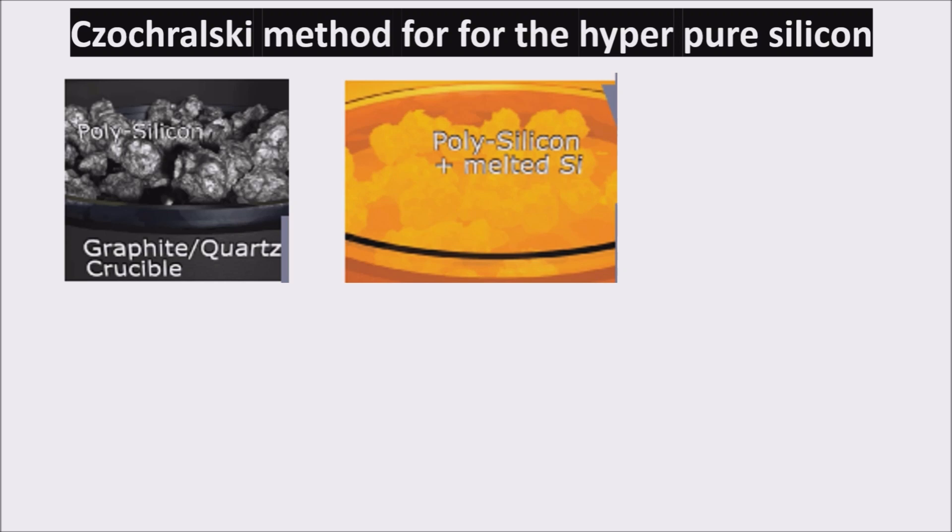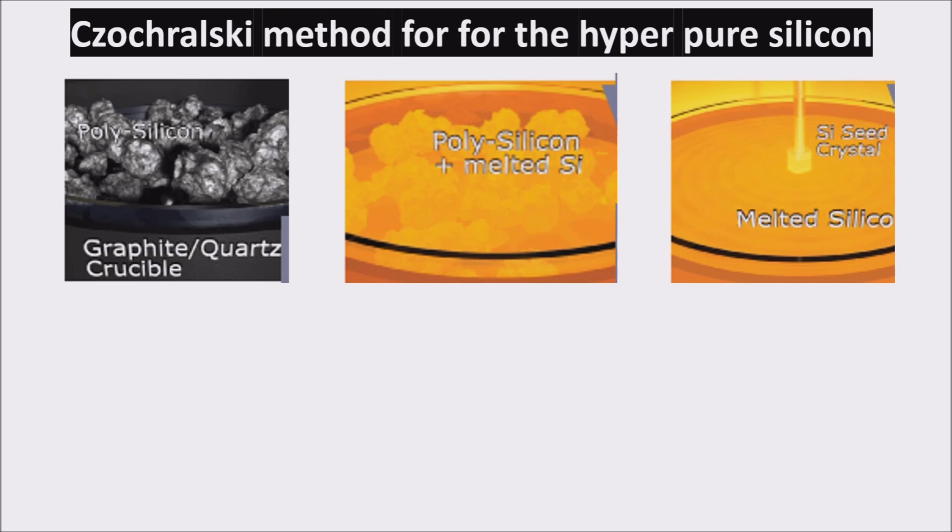The silicon melt temperature is kept constant roughly above the silicon melting point. A monocrystalline silicon seed crystal with the desired crystal orientation is dipped into the melt and acts as a starting point for the crystal formation.